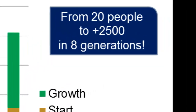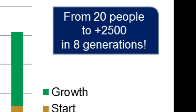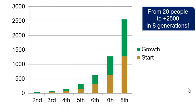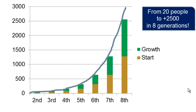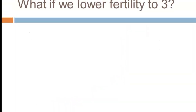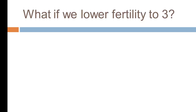If we follow this out to eight generations, we go from just 20 people at the beginning to over 2,500 in roughly two centuries. Scaled up, starting with 20 million people, we'd go from 20 million to two and a half billion in just 200 years — with a fertility rate of four. That exponential growth curve is quite amazing.